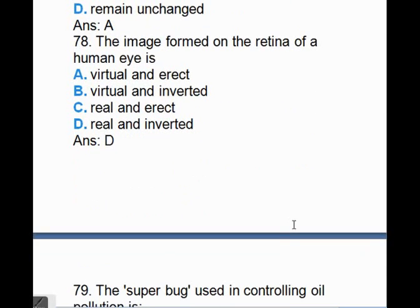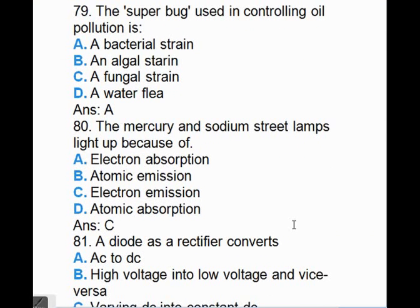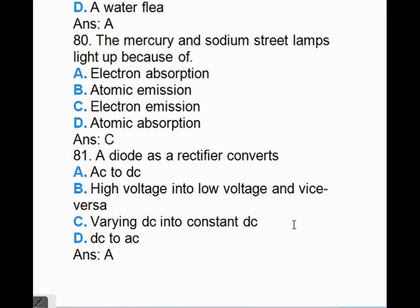The super bug used in controlling oil pollution is, answer is A, a bacterial strain. The mercury and sodium street lamps light because of, answer is C, electron emission. A diode as a rectifier converts, answer A, AC to DC.